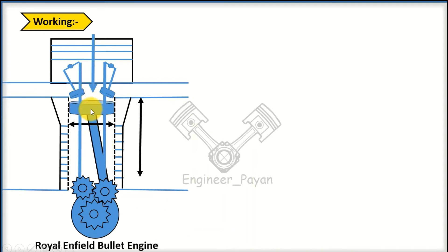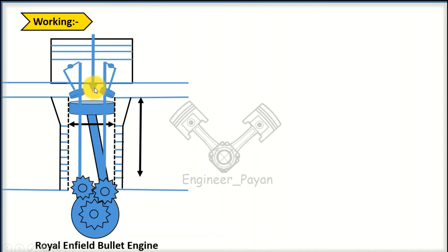If you compare it to the top dead center and bottom dead center, we have an air-fuel mixer. Next, we have a combustion chamber. We have a spark plug that ignites the air-fuel mixture. The air-fuel mixer contains atomized molecules that are compressed before ignition.